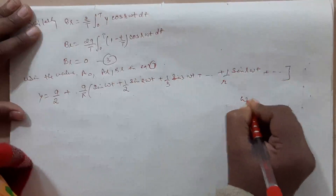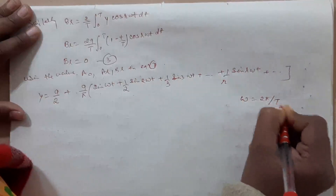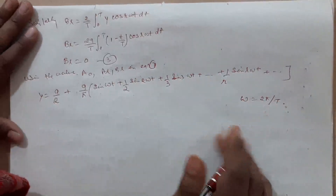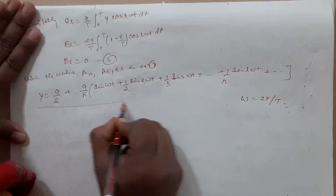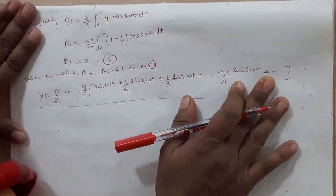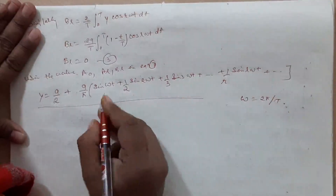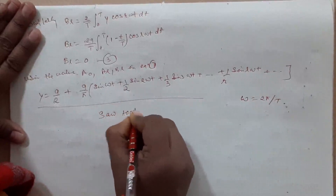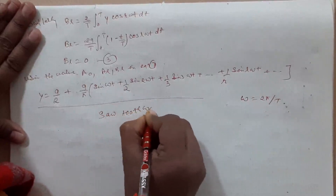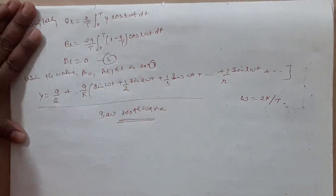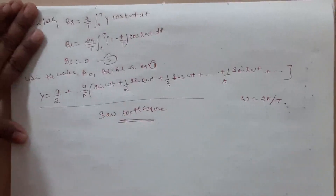Jab ω is equal to 2π upon T — this represents the Fourier series of the sawtooth wave. Sari e y — truth mein that, sari terms confirmed.